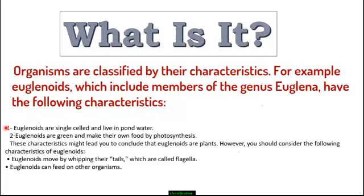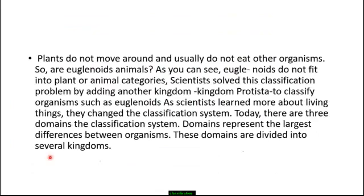Number one: euglenoids are single-celled and live in pond water. Number two: euglenoids are green and make their own food by photosynthesis. These characteristics might lead you to conclude that euglenoids are plants. However, consider this: euglenoids move by whipping their tail, called flagella, which is a characteristic of animals because animals move.